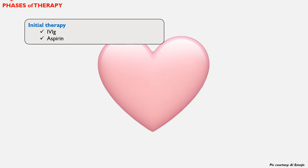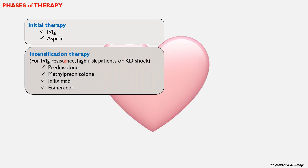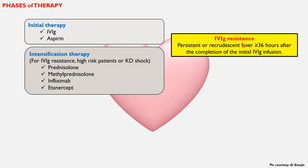There are distinct phases of therapy, which is newly emphasized in this AHA scientific statement. Initial therapy is IVIG and aspirin. Intensification of therapy is indicated in three conditions: IVIG resistance — defined as persistent or recrudescent fever more than or equal to 36 hours after completion of the initial IVIG infusion — high-risk patients with age less than or equal to six months or LAD/RCA Z-score more than or equal to 2.5 on baseline echo, or Kawasaki disease shock.